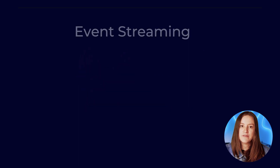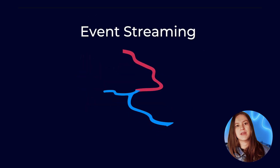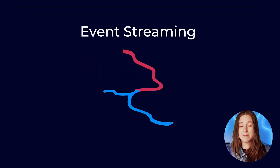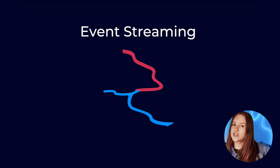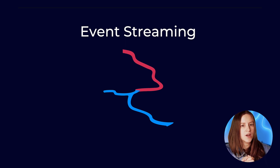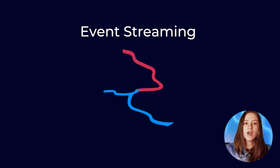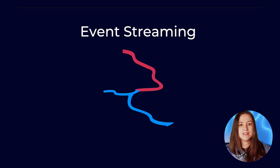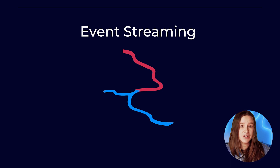Next up, we have event streaming. When we have a repeating phenomenon we want to measure, like changes in temperature for an Internet of Things app, we can record that in something like a database, or we can record a real-time stream. And doing operations like querying, joining, filtering, and aggregation — that's stream processing.